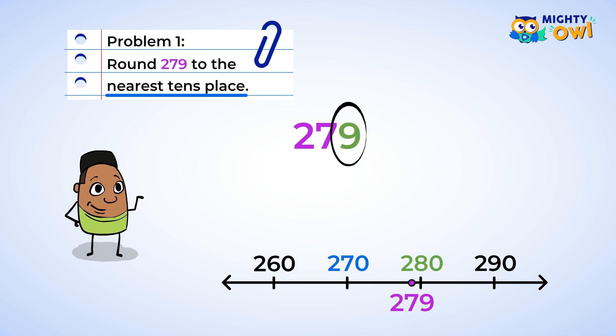There are nine ones. This means that you should round up. Now, look at the tens place, at the seven, and add one more to make it eight. When the number 279 is rounded up, you get the answer of 280.